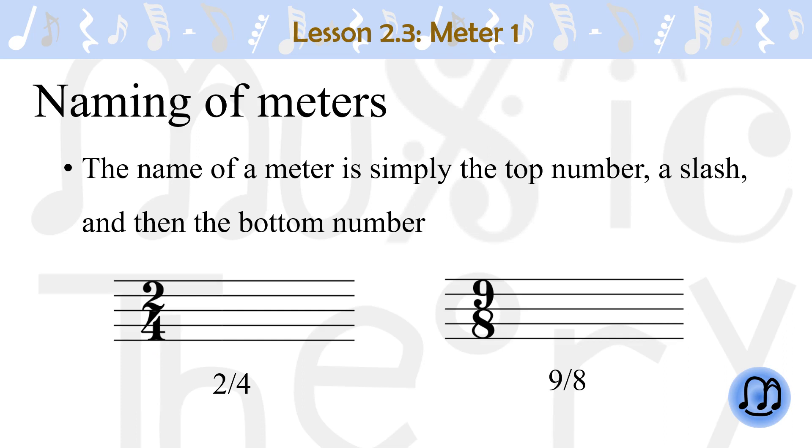The name of a meter is simply the top number, a slash, and then the bottom number. When you say the name, you do not need to say the slash. For example, a 2 on the top and a 4 on the bottom is called 2-4, and a 9 on the top and an 8 on the bottom is called 9-8.